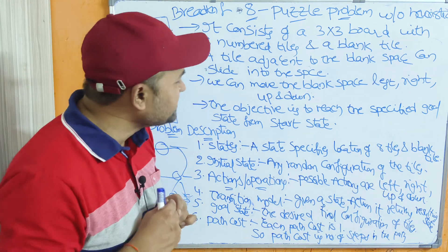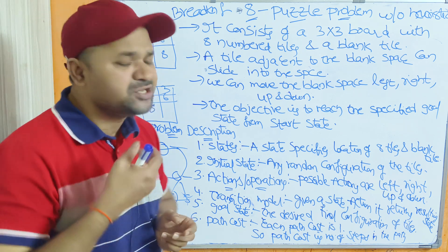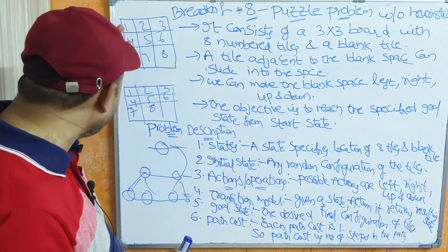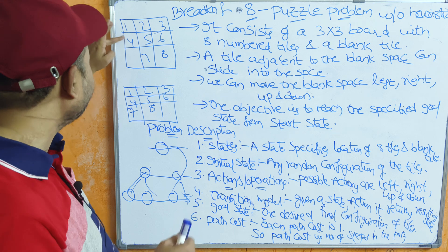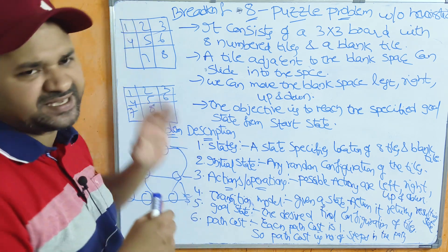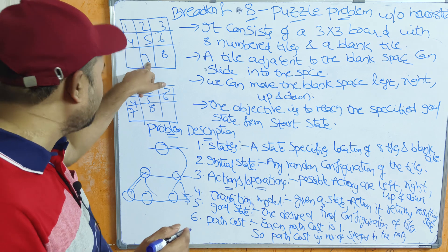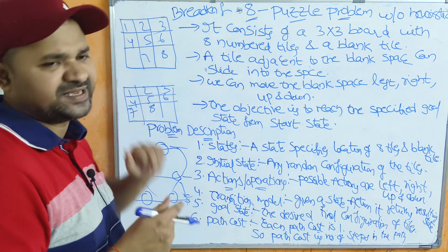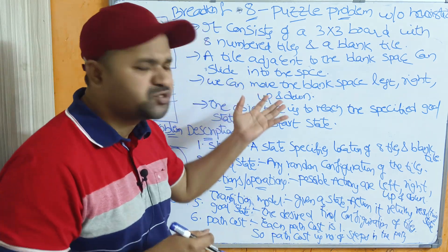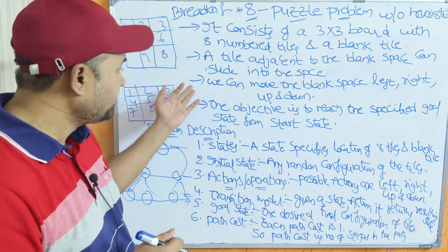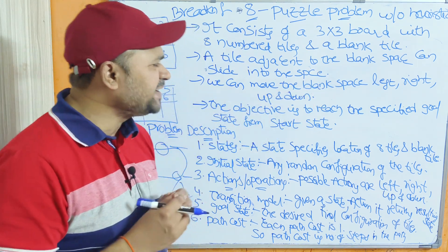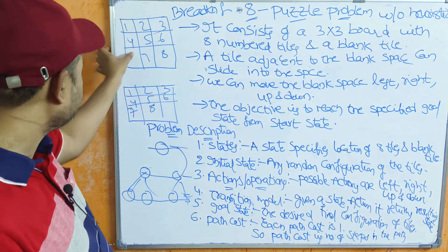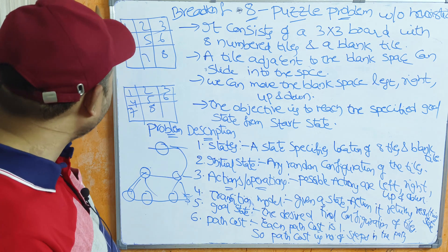A tile adjacent to the blank space can slide into the space. For example, this tile is adjacent to the space, so we can slide this tile into the space. Or, tile number 7 — we can move this tile into the space. Or you can also explain it in terms of the blank space: we can move the blank space left, right, up, and down.